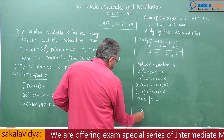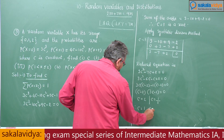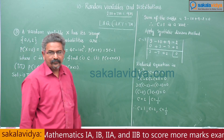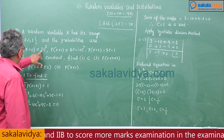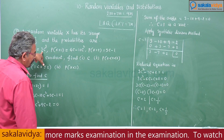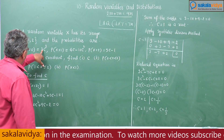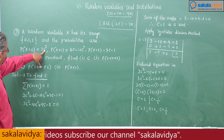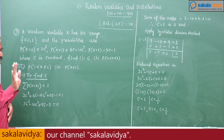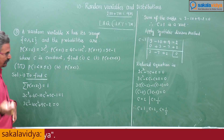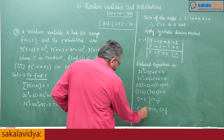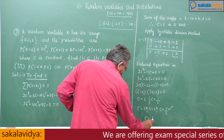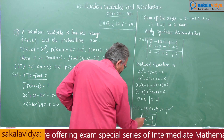Therefore c equals 1, c equals 2, or c equals 1/3. Checking: if c equals 1, probabilities work out to valid values. If c equals 2, the probability of an event becomes more than 1, which is not valid. So those two values are rejected. Therefore c equals 1/3, which lies between 0 and 1.